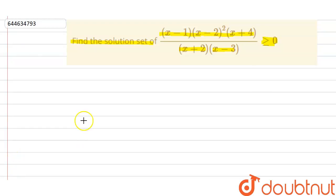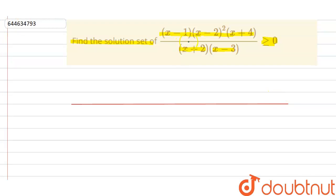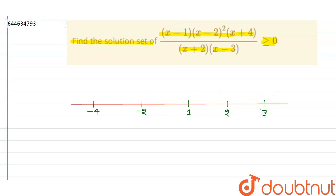Just draw the number line. So the critical points are: minus four, minus two, and similarly one, two, and three.